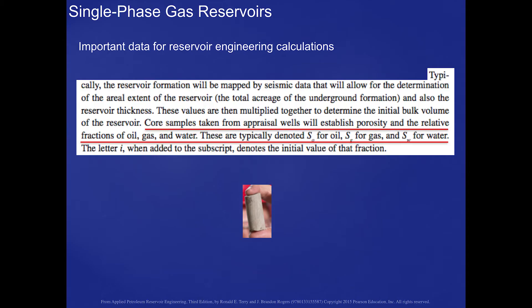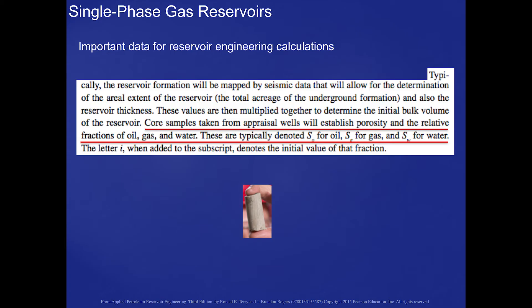Another source of data that we need is what we call core samples. We typically will take, as this diagram shows, one-inch diameter, about two-inch long samples of the rock structure itself, at every one-foot interval in the pay zone. We'll bring those core samples to the surface and measure saturations and porosity, so we'll get a feel for how much of the core contains water, gas, or, in the case of an oil reservoir, oil. We give them the symbols S sub O for oil, S sub G for gas, and S sub W for water, as we talked about in Chapter 1.